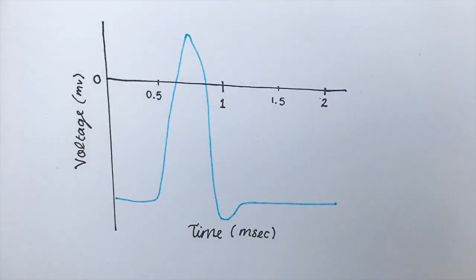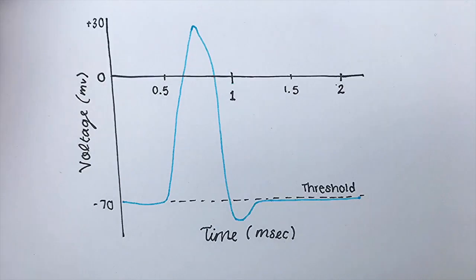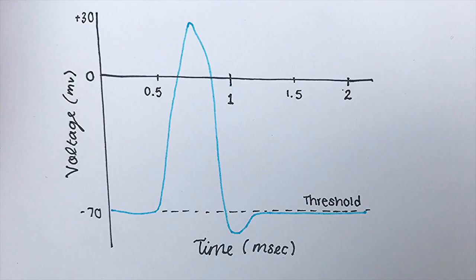They show a continuous fluctuation in voltage, and the shape of the fluctuation depends on a variety of factors, like the type of neuron, cell membrane excitability, and of course, the variety of stimuli present.